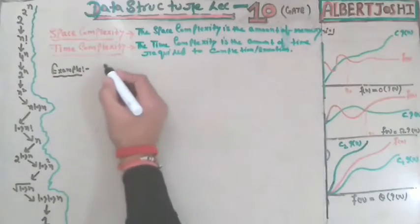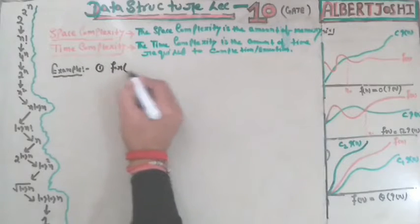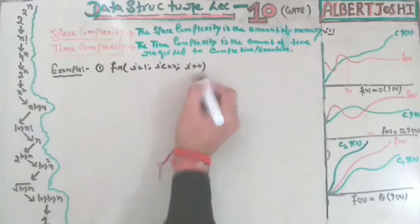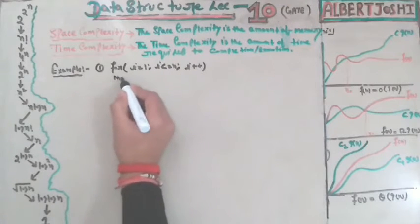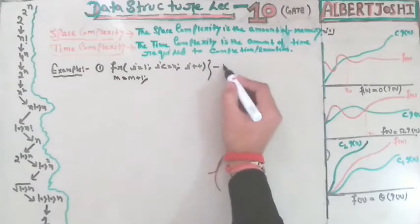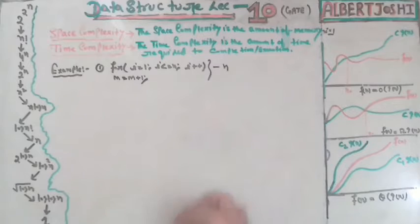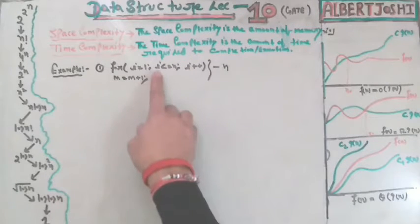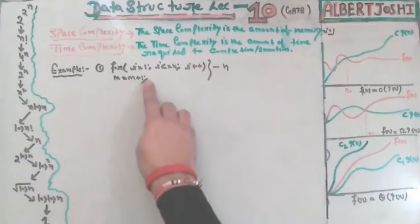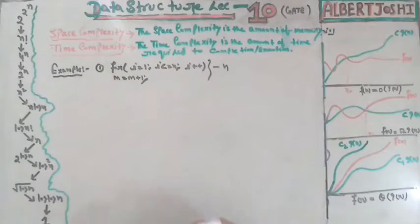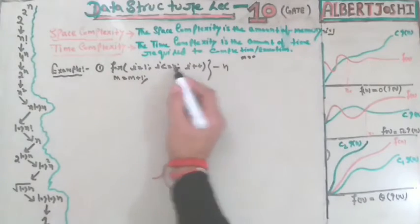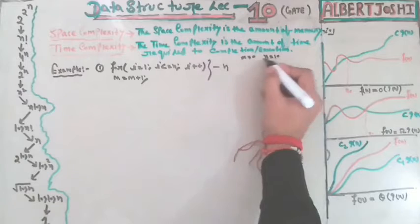The first example: we have written a for loop — for i equal to 1, i less than or equal to n, i++. Then inside we have written m = m + 1. Let m = 0 and let n = 10. This loop works n times — it checks for i = 1, then i = 2, and so on.